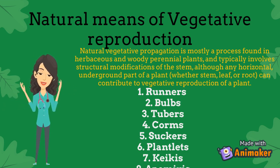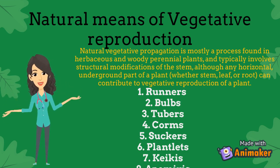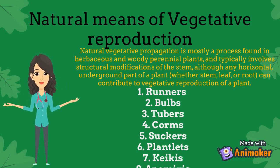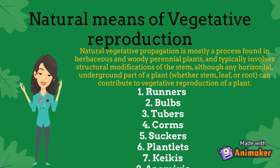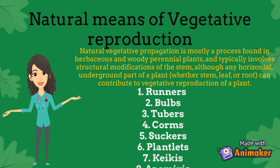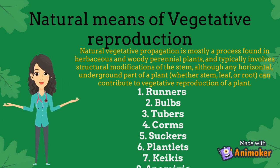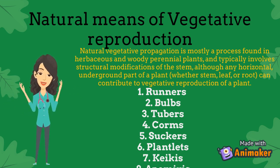Tubers develop from either the stem or the root. Stem tubers grow from rhizomes or runners that swell from storing nutrients, while root tubers propagate from roots that are modified to store nutrients, becoming too large and producing a new plant. Examples of stem tubers are potatoes and yams, and examples of root tubers are sweet potatoes and dahlias.